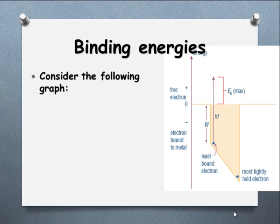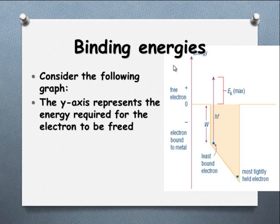Let's have a look at this graph. What's represented here on the y-axis is the amount of energy required for an electron to be released in a given metal.